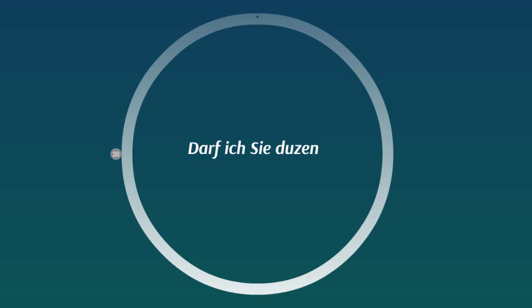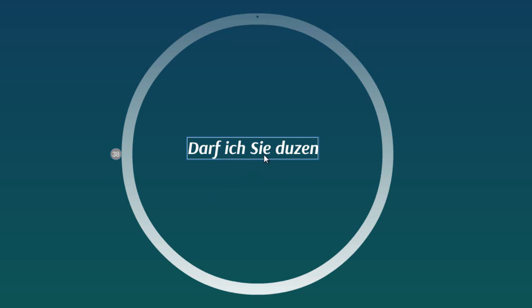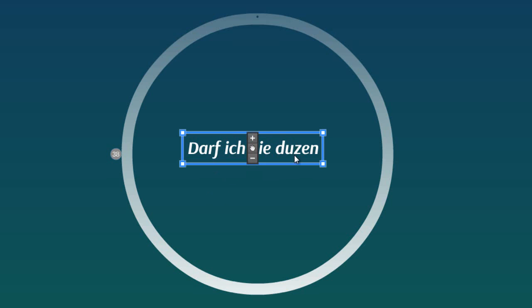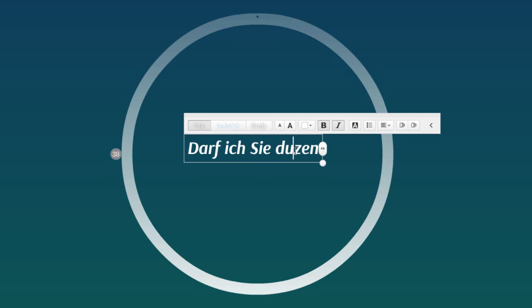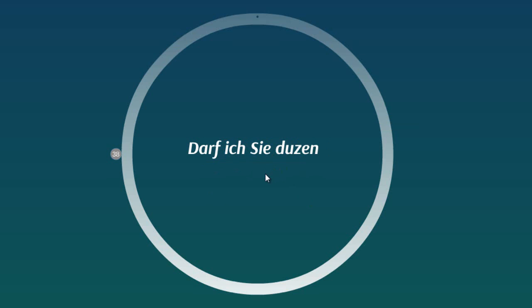But how would you say that in German? You would say: 'Darf ich Sie duzen?' 'Darf' means 'allowed', so 'darf ich' means 'am I allowed'. 'Sie' is the respectful form of 'you'. 'Duzen' comes from 'du' — they turned it into a verb. The whole sentence means: 'Can I call you with du?' — i.e., can I address you informally?